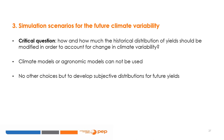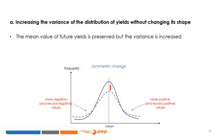Then, relevant simulation scenarios for a changing future variability must be defined. The critical question is exactly how and how much the historical distribution should be modified in order to account for changes in climate variability. This evaluation is challenging. Even though the hypothesis of a future greater variability is well accepted, climate or agronomic models are not really able to forecast it adequately. Therefore, there is often no other choice but to develop our own subjective distributions for future yields. The first option consists of increasing the variance of the distribution of yields without changing its shape. With this approach, the mean value of future yields is preserved, but the variance is increased — the deviations are the same on average, but there will be more extreme positive and negative values in the future.